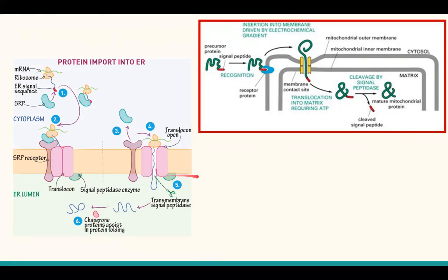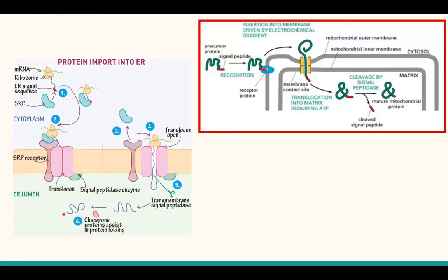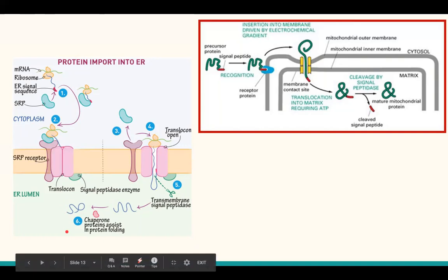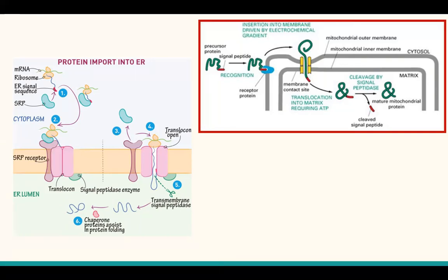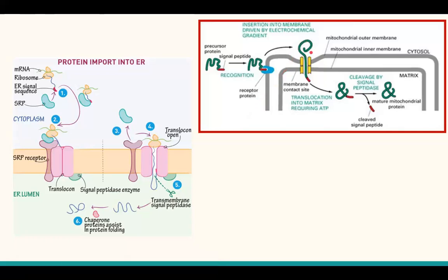On the right-hand side there's the mitochondrial protein. Similar to the ER protein, it'll enter the organelle unfolded. Once it's inside, it gets cleaved by a special protein, and then chaperone proteins — though not labeled there — are there to help refold it. Hopefully that makes sense. Just feel free to interrupt me if you have any questions.